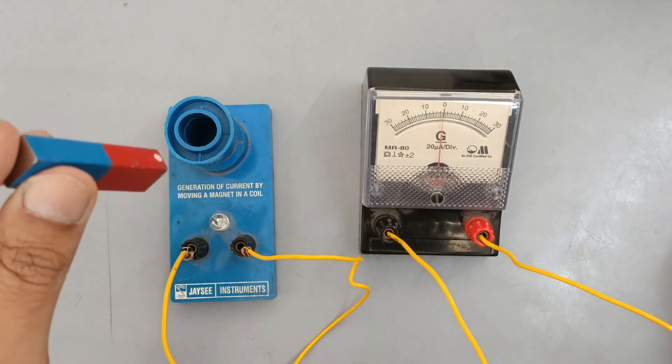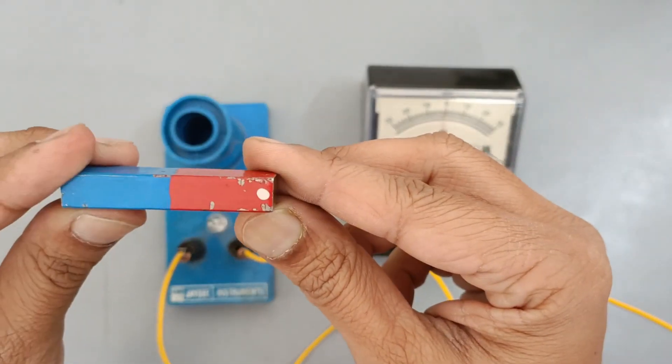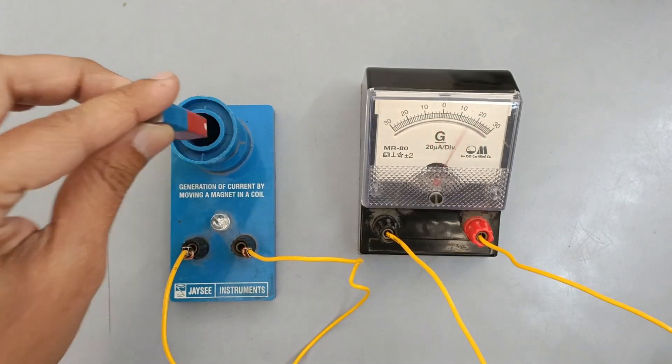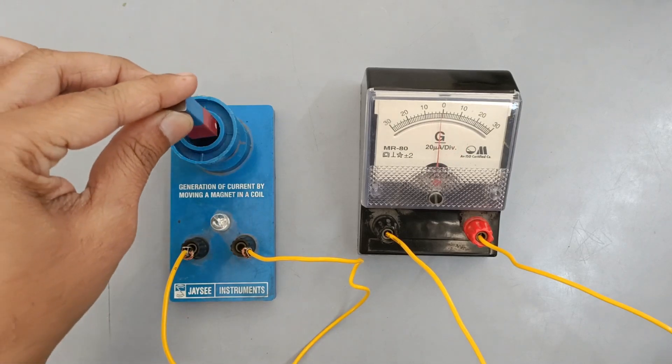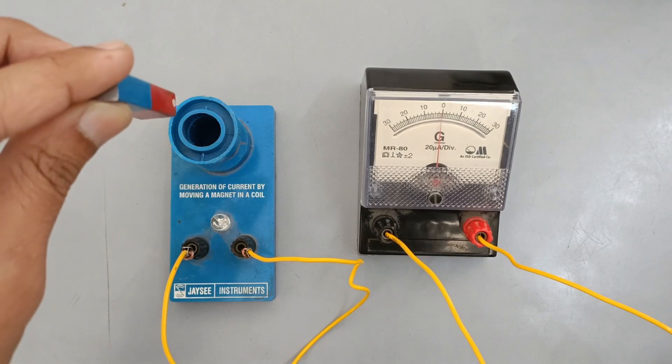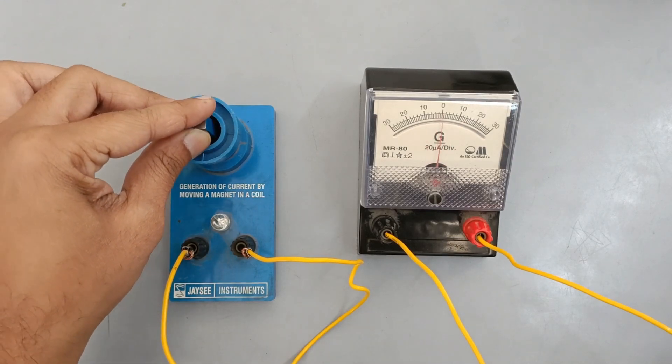Now the north pole of the bar magnet is moved towards the solenoid. Notice the deflection in the direction of the needle of the galvanometer. On removing the magnet out, the direction of induced current reverses.